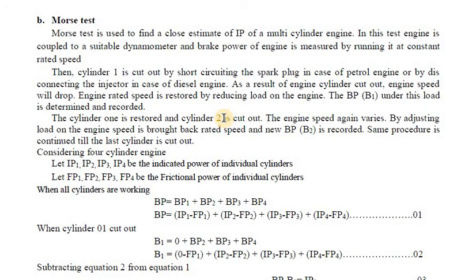Initially with all four cylinders working the engine speed is 2000 RPM. After cutting one cylinder, the speed may drop to 1800 or 1900 RPM. You can regain the original 2000 RPM speed by reducing the load on the engine — with only three cylinders working, the original speed is restored. Then the brake power under this new load is measured and recorded as B1 — the brake power when cylinder one is cut off.